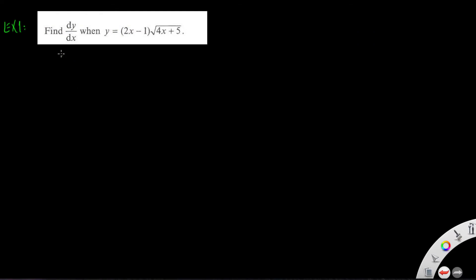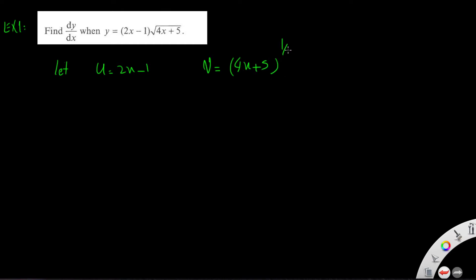Example 1: Find dy/dx when y is equal to (2x minus 1) times the square root of (4x plus 5). Let u be (2x minus 1) and v be (4x plus 5) to the power of one half.